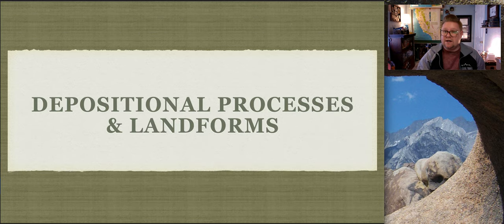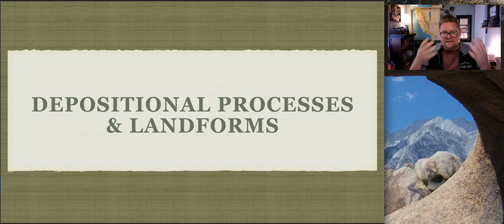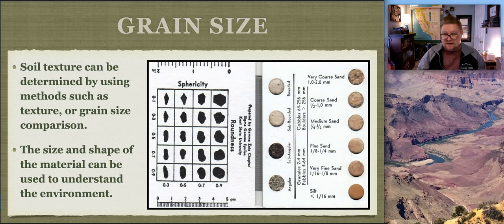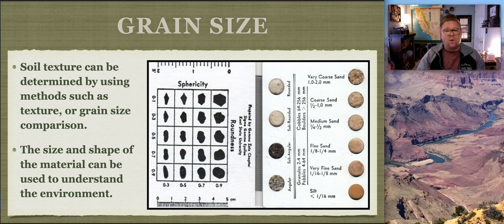Next we talk about depositional processes and landforms - material that has been removed, transported, and now is at its resting place. The first thing to discuss is grain size. The word 'sand' does not describe the chemistry - it does not define what it's made out of. The word sand is actually a measurement, so it doesn't matter what the sand is made of; if it meets that measurement, we consider it sand.